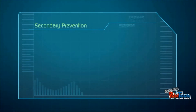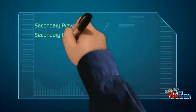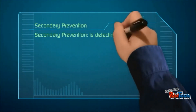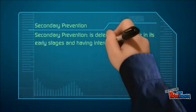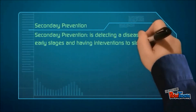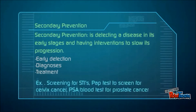Secondary prevention is detecting a disease in its early stages and having interventions to slow its progression. The three points of secondary prevention are early detection, diagnosis, and treatment. An example of secondary prevention is screening for STIs or PAP tests to screen for cervical cancer.